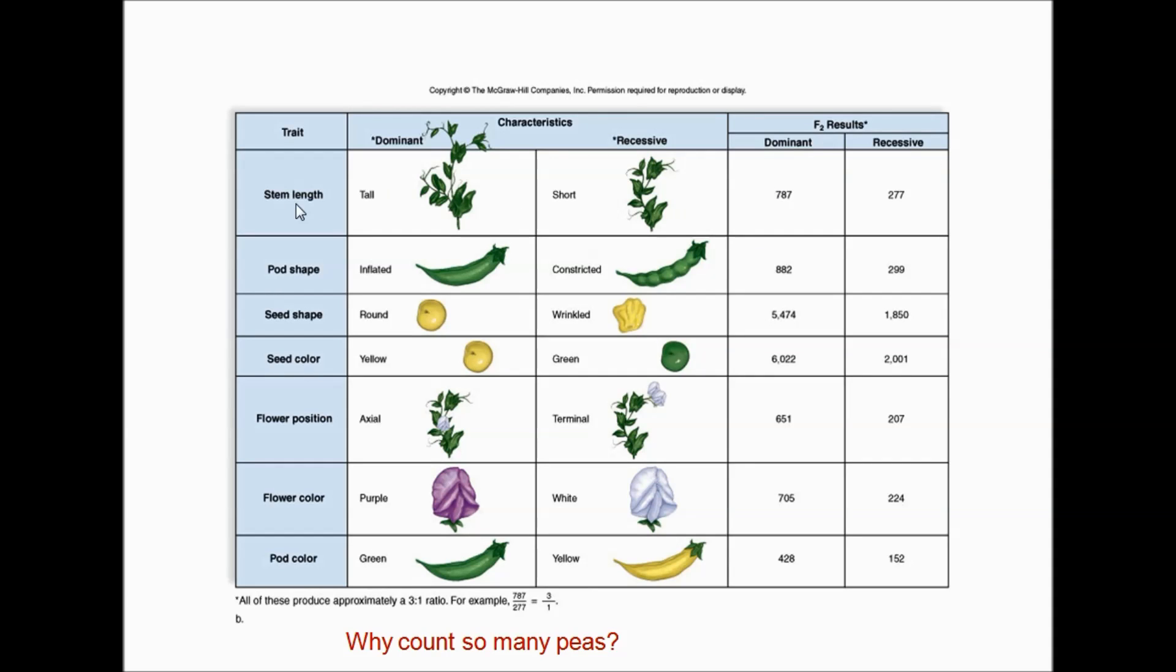So here are his real numbers. For example, tall and short, he had 787 plants that were tall, 277 that were recessive. And if you look down this list, you'll see that that's generally a three to one ratio. He counted so many peas because more data is valid. That's extremely important in all of science to have enough data to support so some small anomaly can't change things for you.